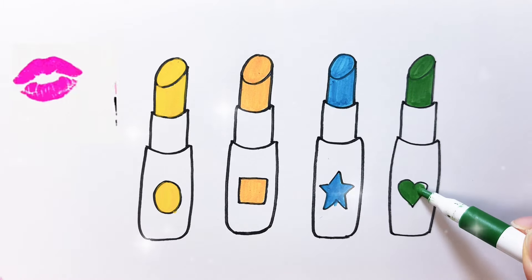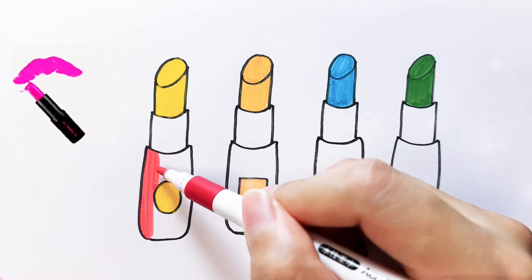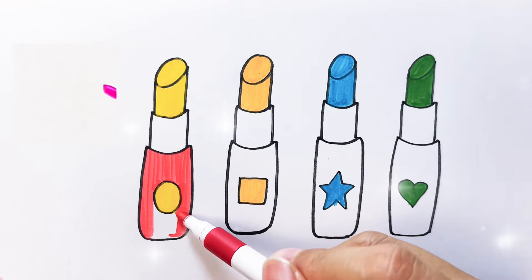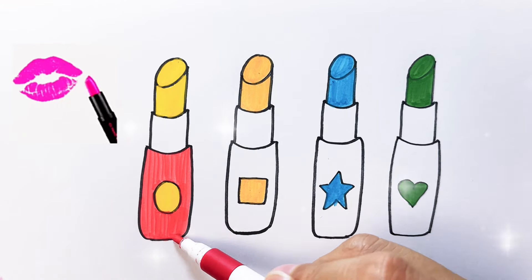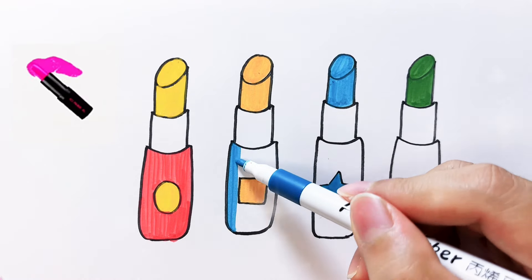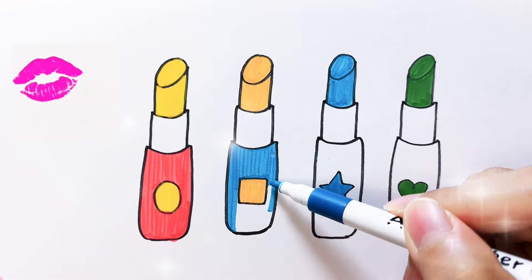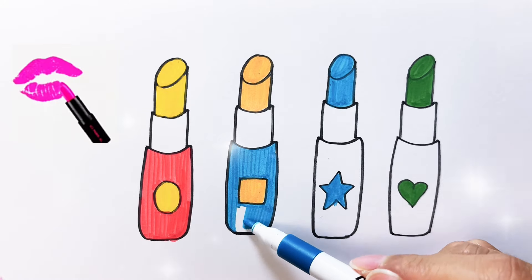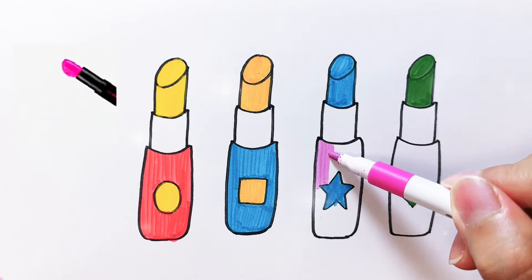A, B, C, D, E, F, G, H, I, J, K, L, M, N, O, P, Q, R, S, T, U, V, W, X, Y, and Z. Now I know my ABCs, next time won't you sing with me?